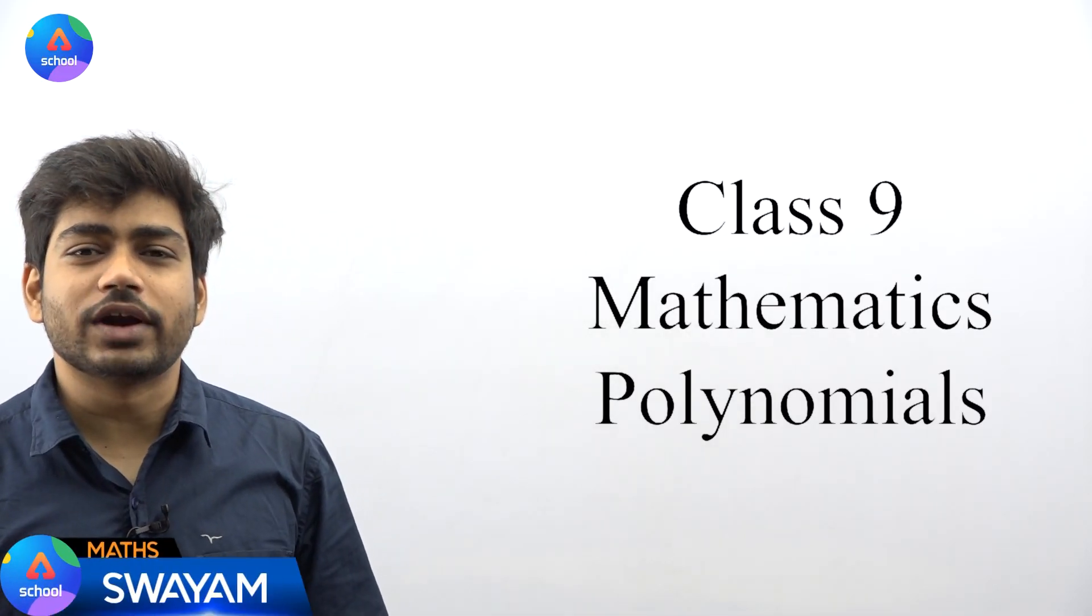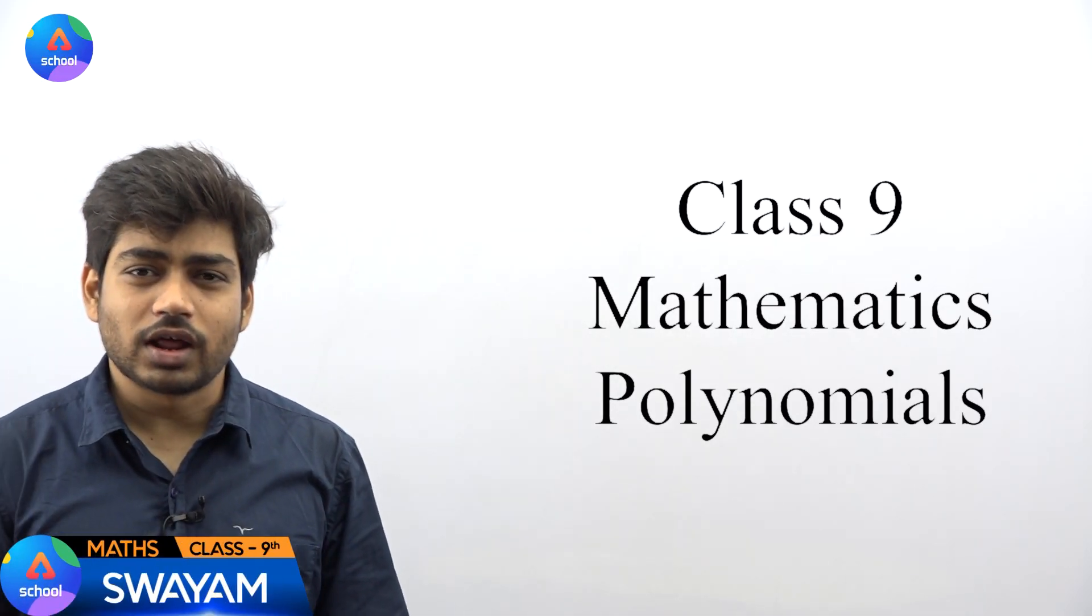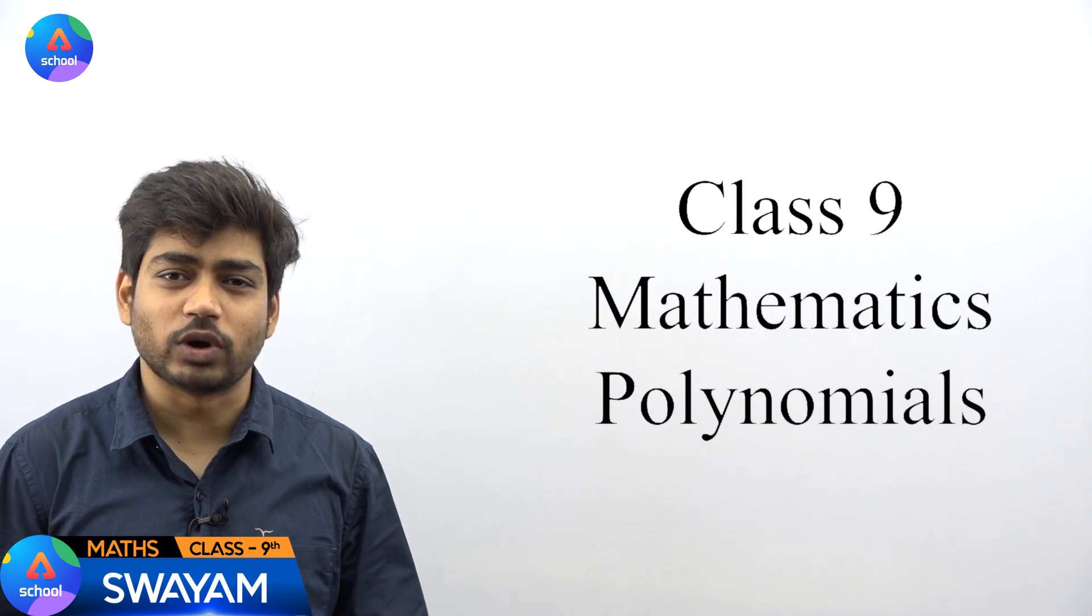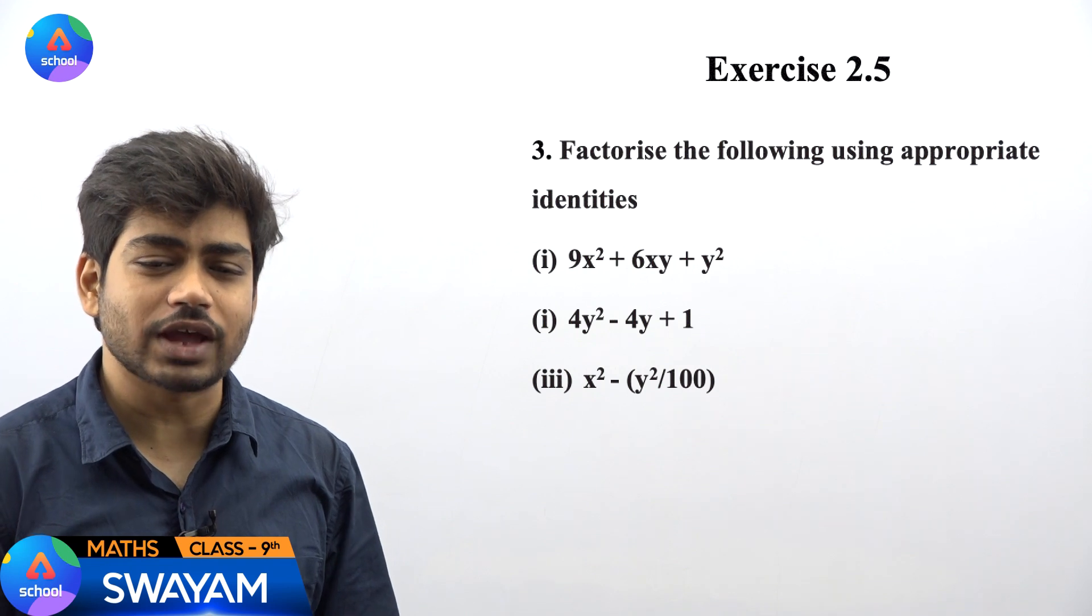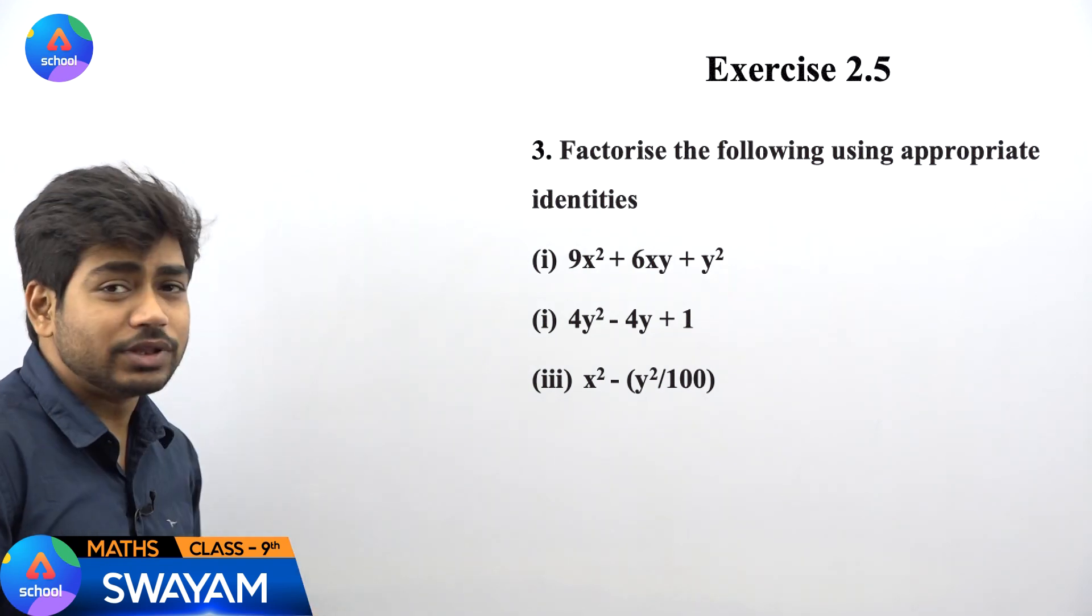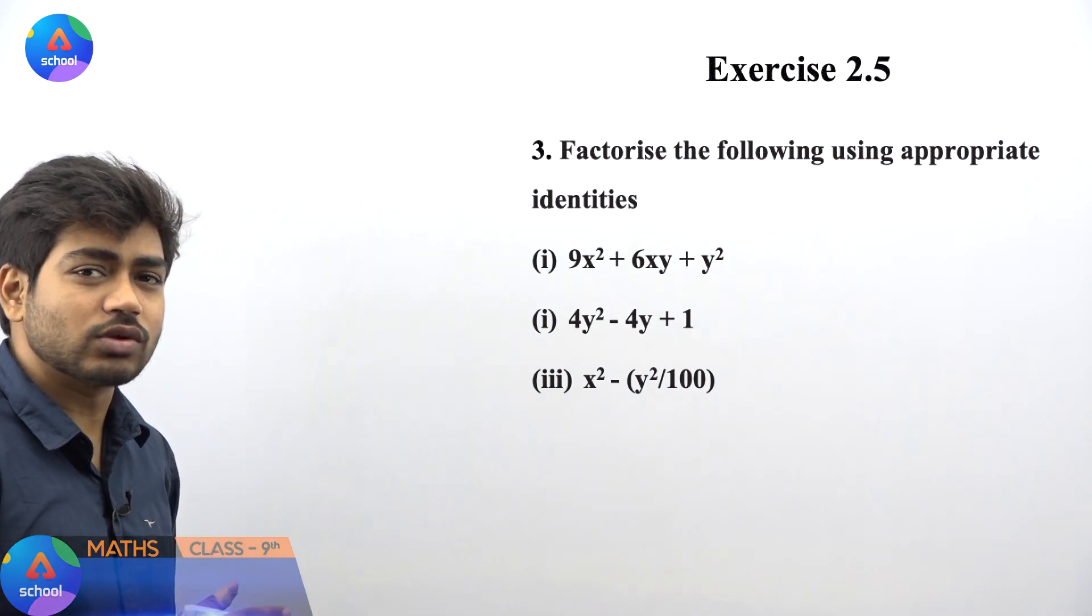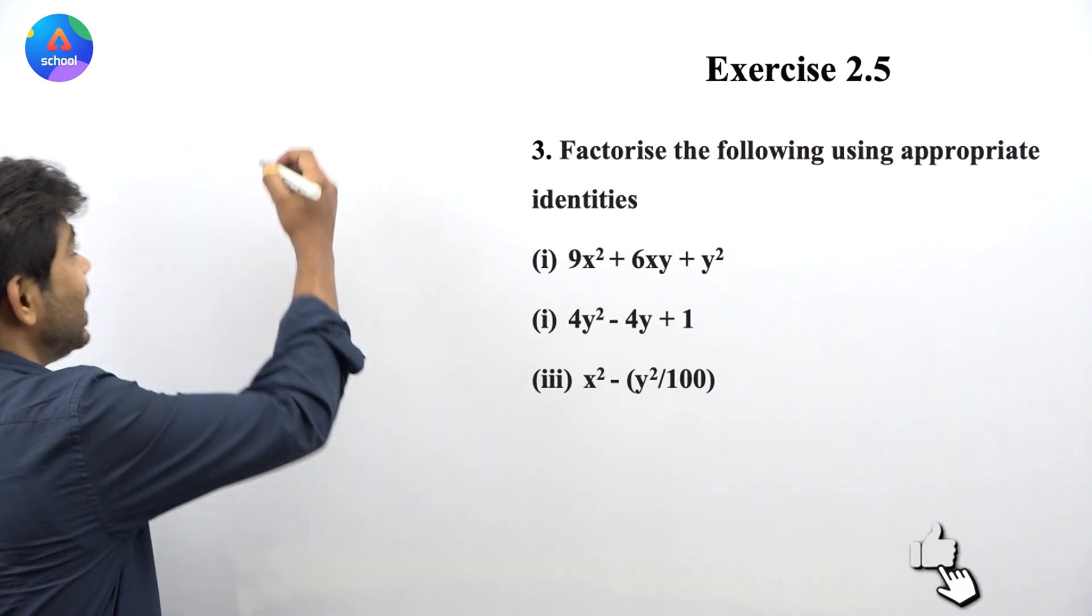Hello and welcome students to Adda 24x7 online school. We are doing Polynomials Exercise 2.5 Question Number 3: Factorize the following using appropriate identities. Let's use appropriate identities and talk about the first part.